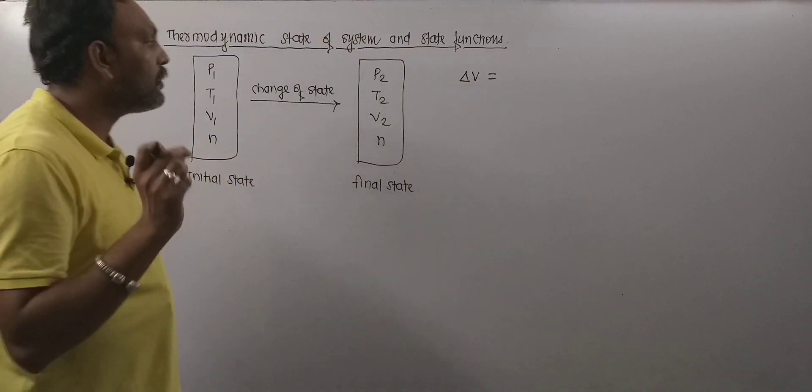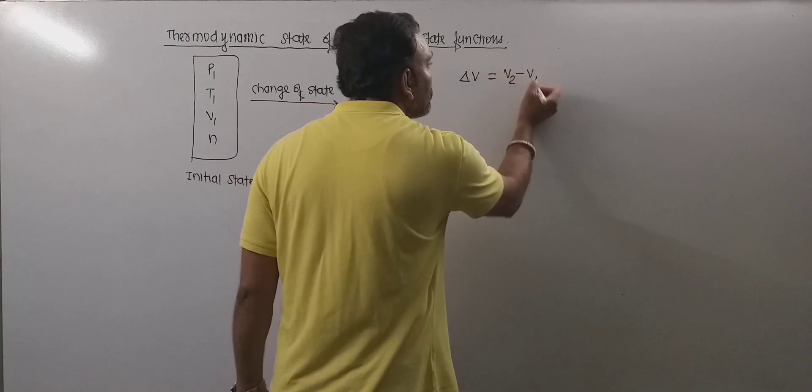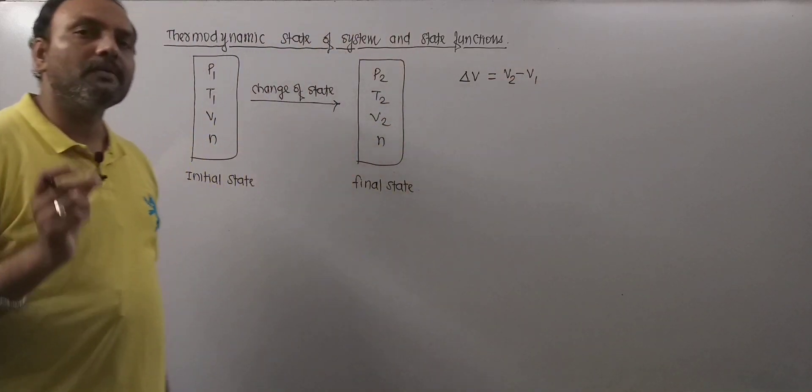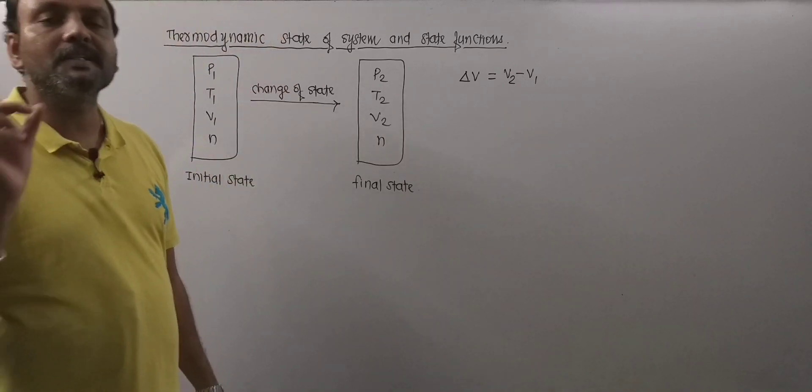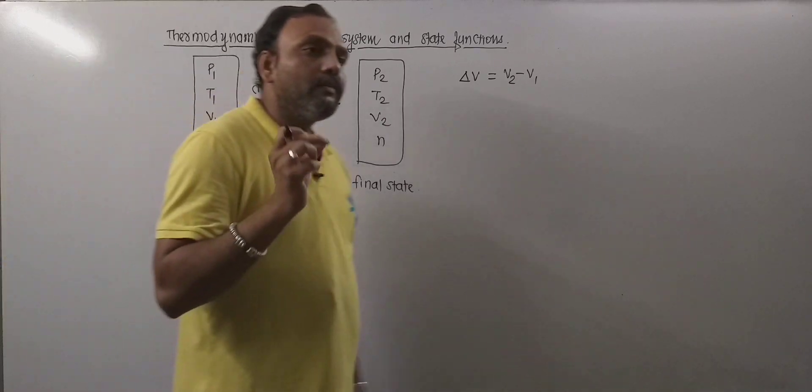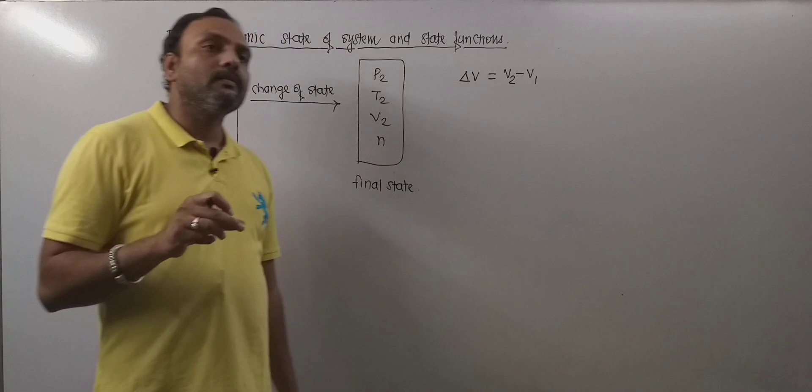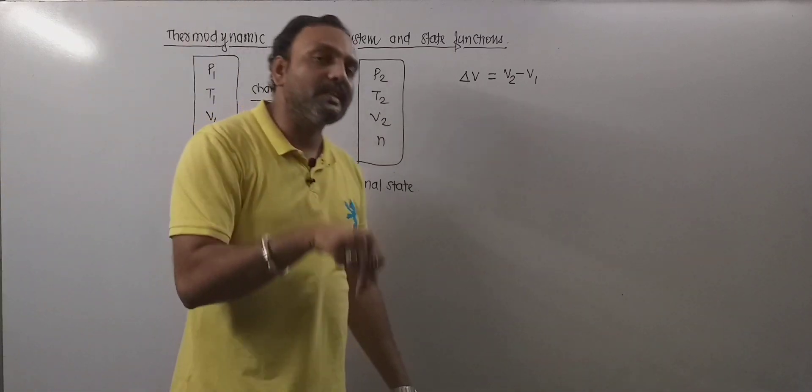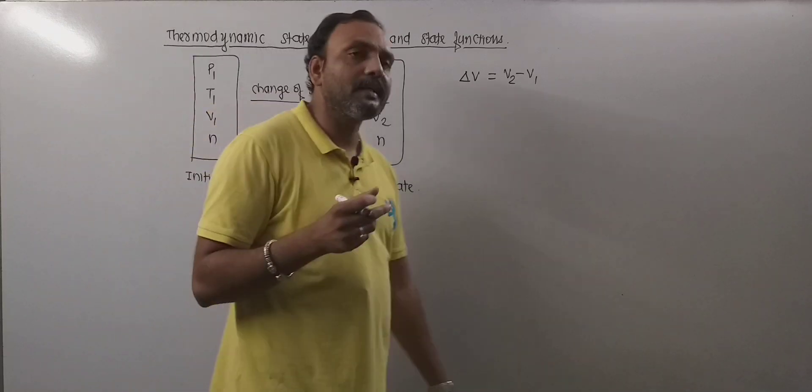To calculate change in volume, it depends directly on initial and final state of the system. v2 minus v1 gives the change in volume. This means that volume is a function of state, a state function. Any function which depends on the path followed by the system is said to be a path function.